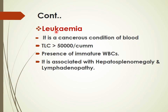Leukemia is a cancerous condition of the blood in which the total leukocyte count is increased to more than 50,000 per cubic millimeter of blood. In leukemia, WBCs are immature, and it is associated with hepatosplenomegaly and lymphadenopathy.